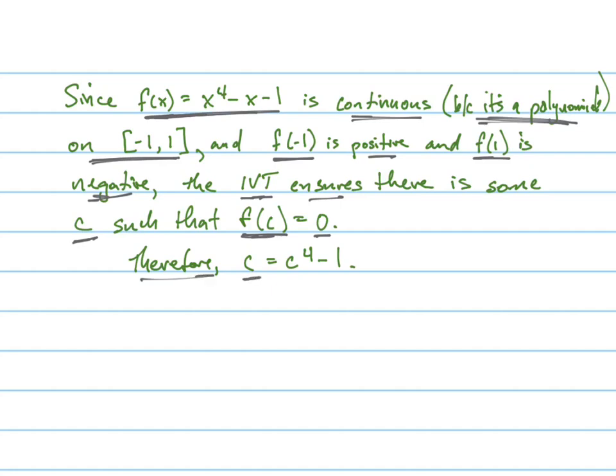Therefore, c equals c to the fourth minus one, which means c is equal to one less than that number to its fourth power. And that's how we would write it.